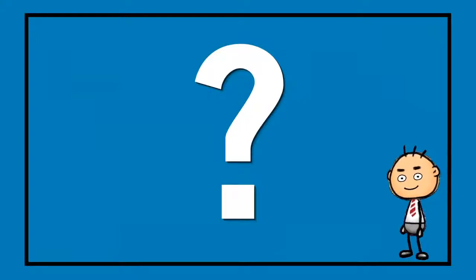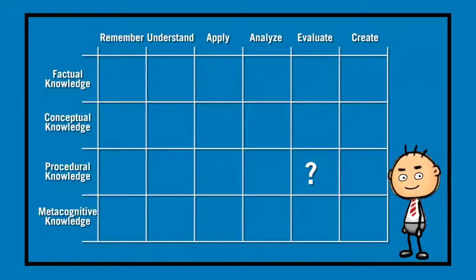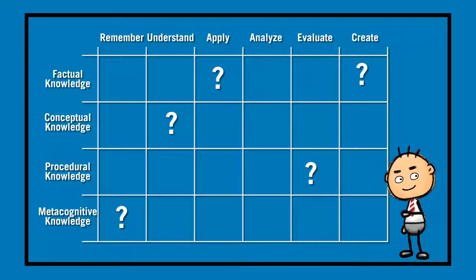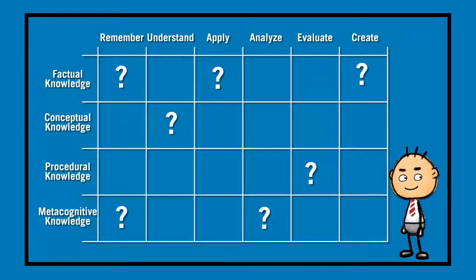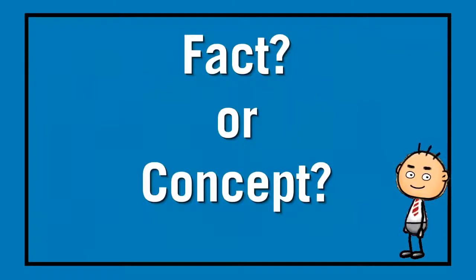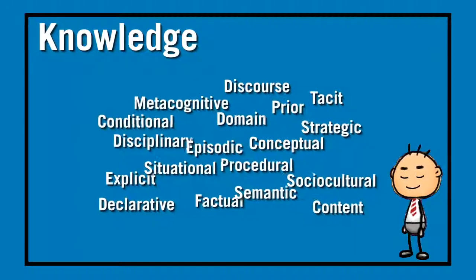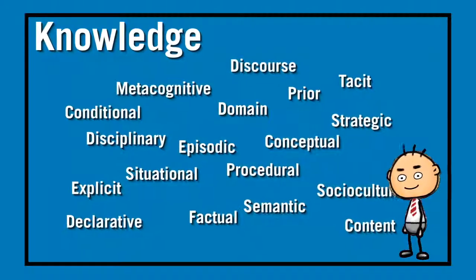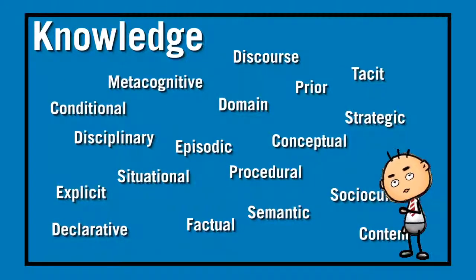Perhaps you faced some challenges when you were trying to place your objectives in the taxonomy table. Perhaps you were confused as to where to put some of the objectives. You might have asked yourself if this particular goal is a fact or a concept. It's not uncommon for one to have some trouble in categorizing knowledge. There is a multitude of terms that people use to describe knowledge. With the taxonomy table, Anderson and others have settled on four types of knowledge.